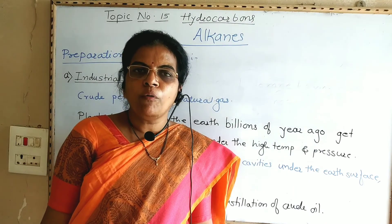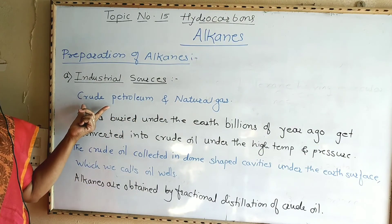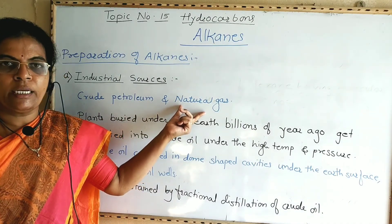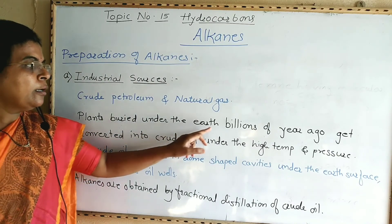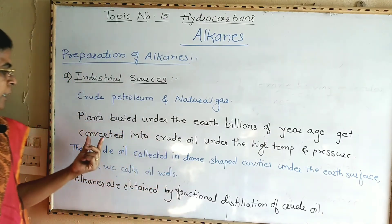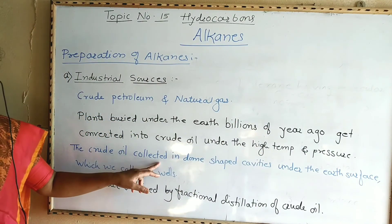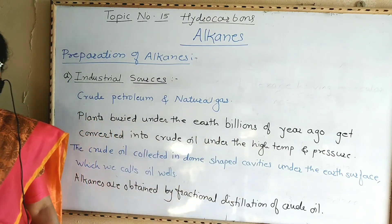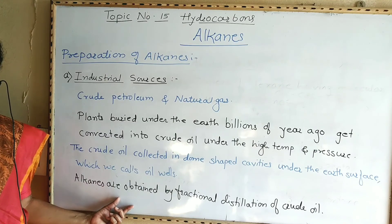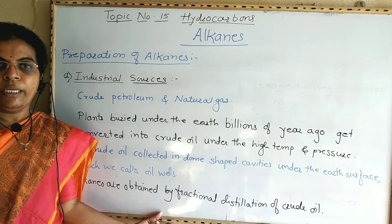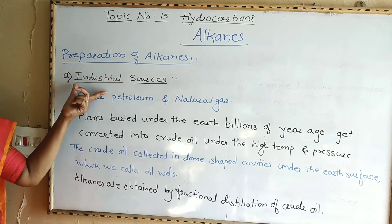Next we are going to see the preparation of alkanes, starting with industrial sources. Crude petroleum and natural gases are the best sources of alkanes. Plants buried under the earth billions of years ago got converted into crude oil under high temperature and pressure conditions. Crude oil is collected in dome-shaped cavities under the earth's surface called oil wells. Alkanes are obtained by fractional distillation of crude oil. Crude petroleum and natural gases are thus the industrial sources of alkanes.